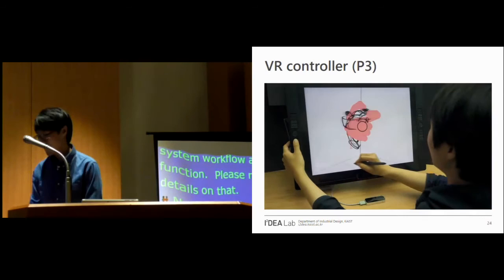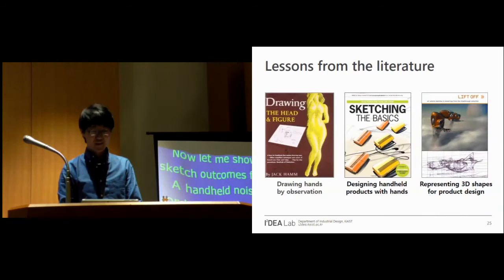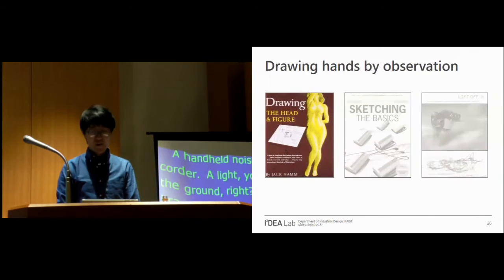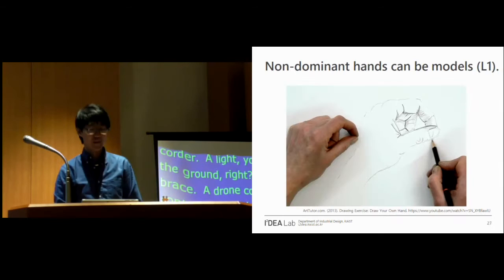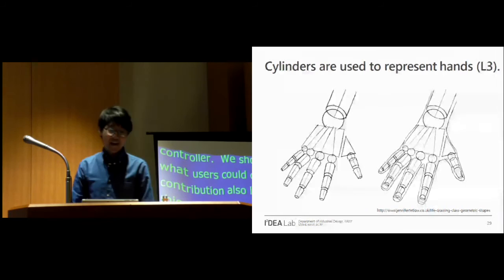So we showed our system and what the users could create. But our core contribution also lies on how we design this integrative system. So we analyzed the literature in the fields of art and product design. First, we investigated how traditional artists draw hands by observation. They use their non-dominant hands to exercise various poses. Mirrors to get opposite views of them. And cylinders to simplify hands.